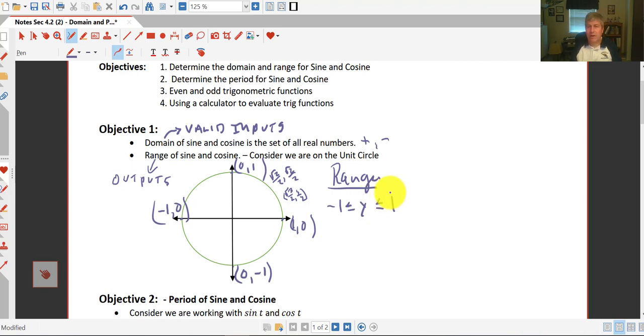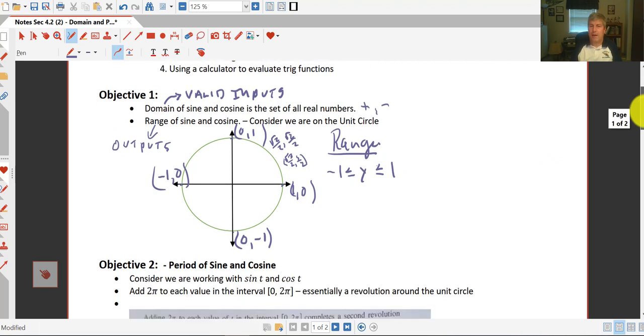Now this is not true for tangent and cotangent. We'll look at those at a different time, but we get different results for that for both our domain and our range.